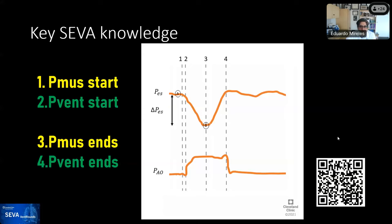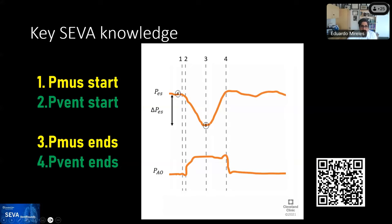A key Seven knowledge: Rob put in one of our articles that's online ahead of print — this is free, and this is the QR code for it. One of the key seven knowledge points is to understand that the patient is the reference. On the top waveform you have the esophageal pressure, and on the lower one you have the airway opening pressure. The dashed lines indicate where certain activities started: line one indicates where PMOS started, and line two indicates where the ventilator starts. There's always a lag because of the performance of the ventilator and signal travel distance, but as long as it's not clinically significant, it's considered on time.